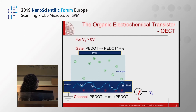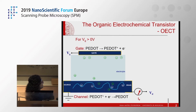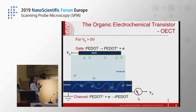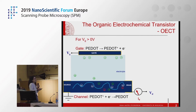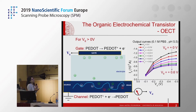For example, if we apply a positive gate bias to the gate electrode, cations from the electrolyte are injected into the polymer channel, which is de-doped from charge carriers and therefore its conductivity decreases. As a result, from IV recordings we see the expected modulation in the output current.